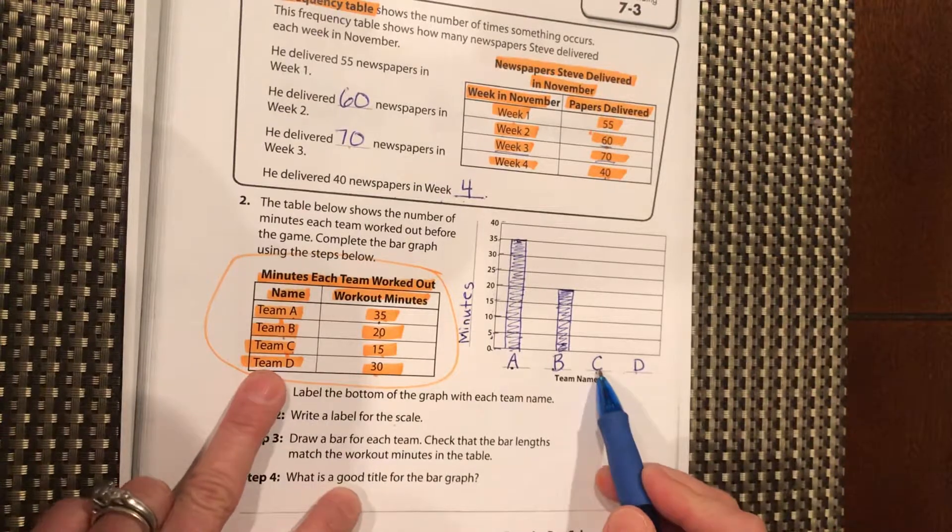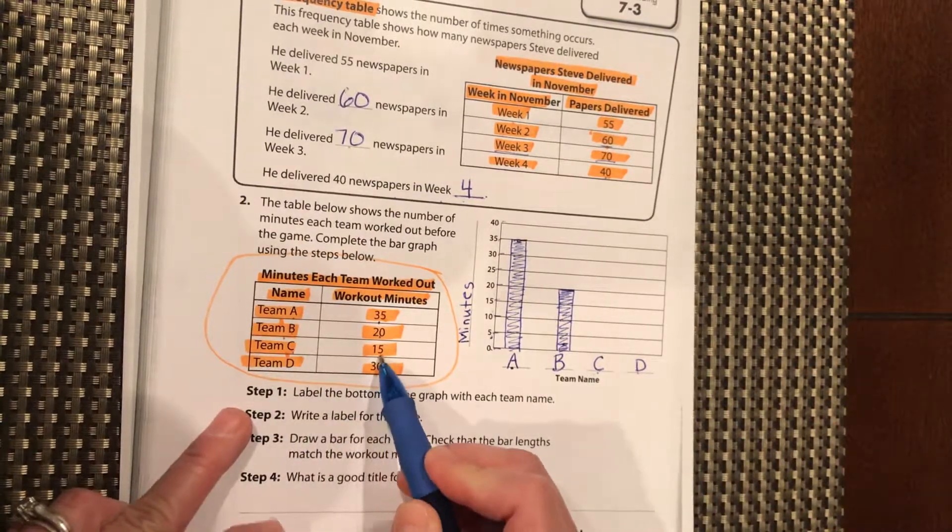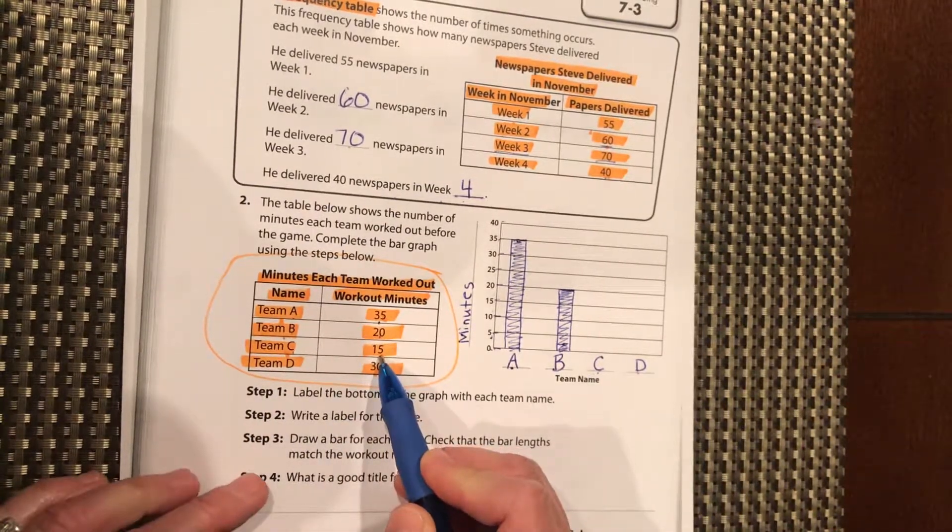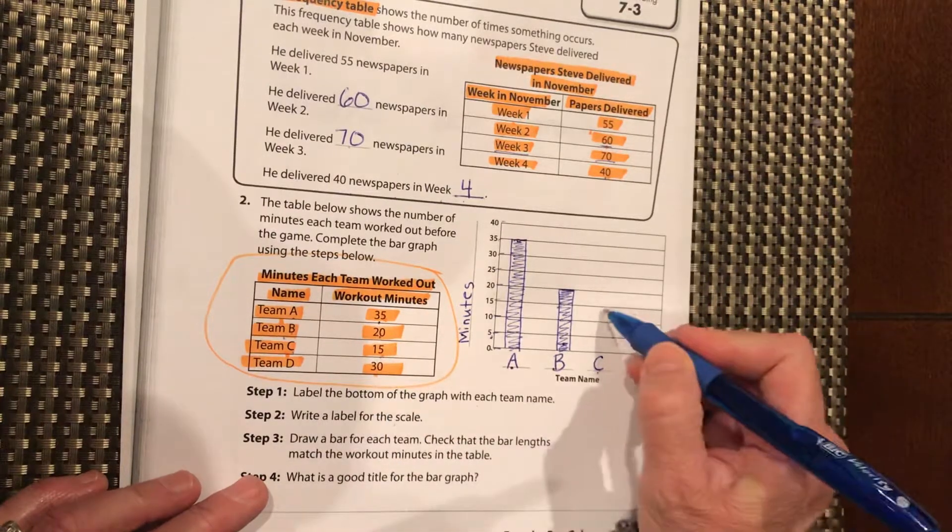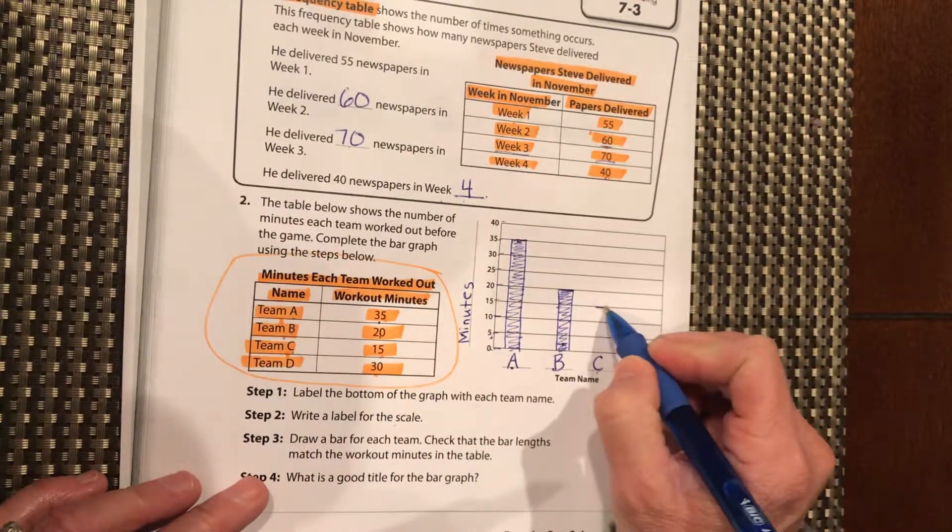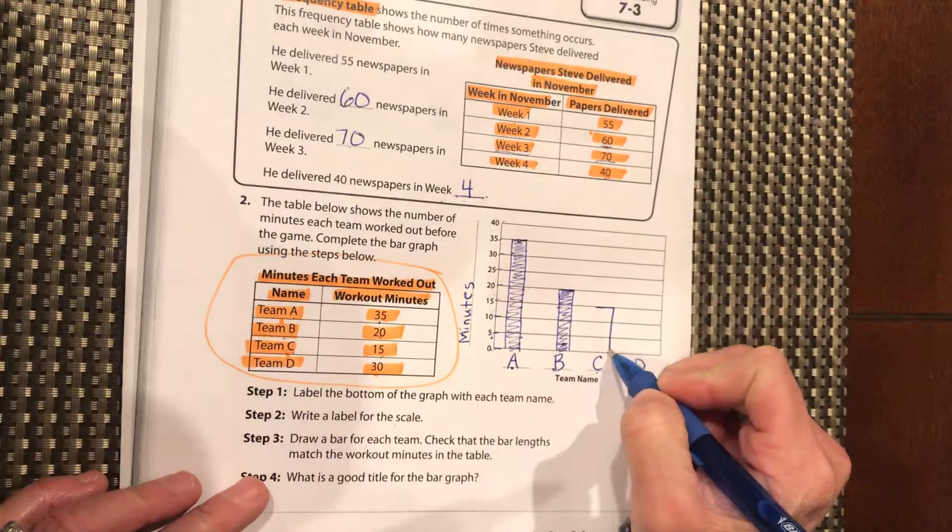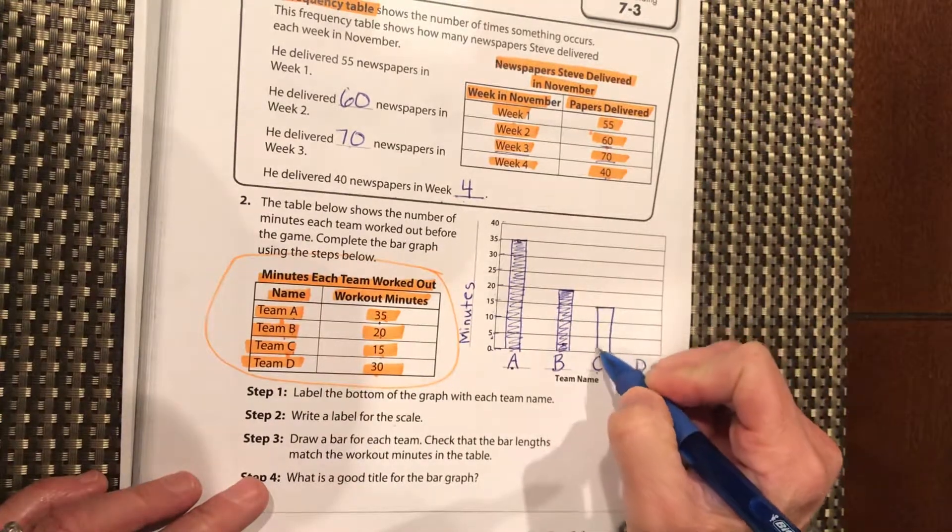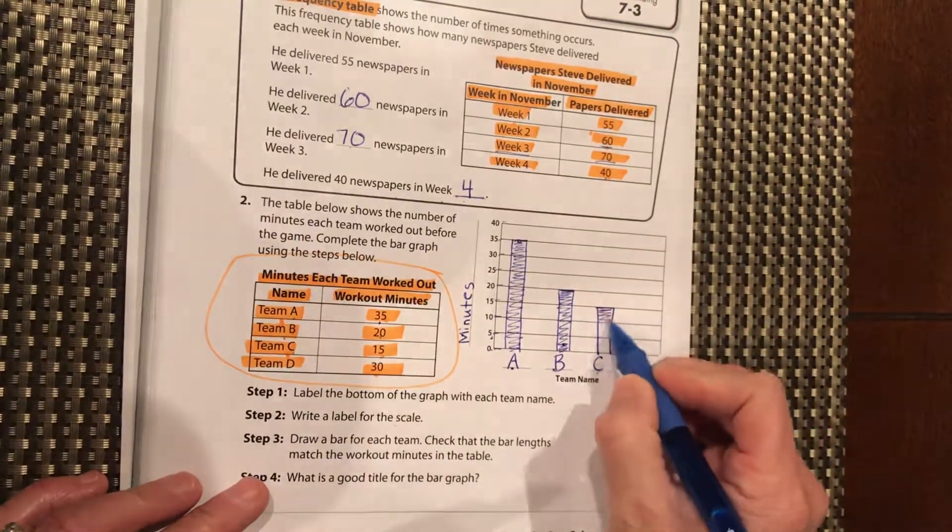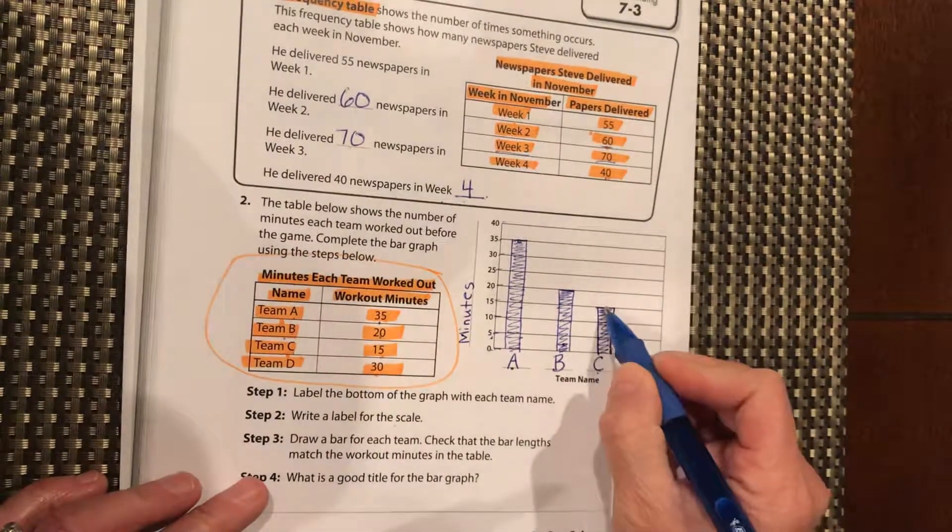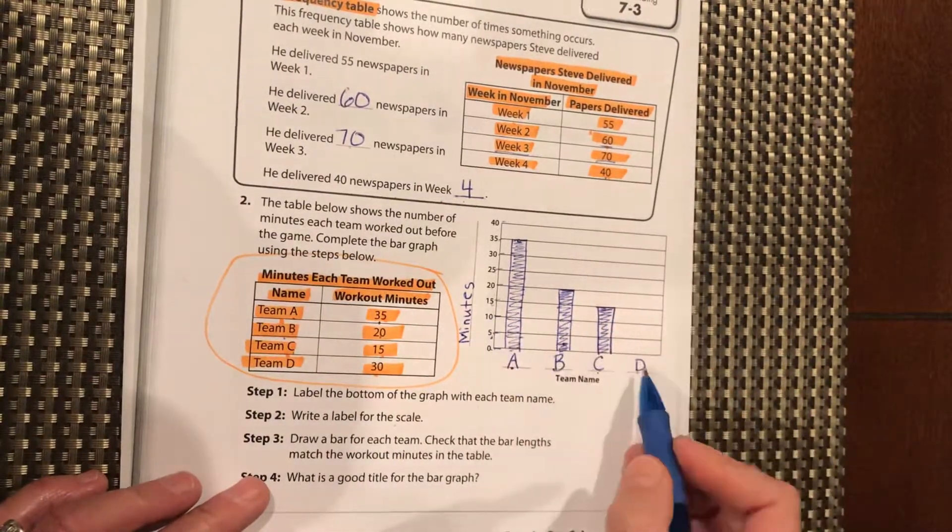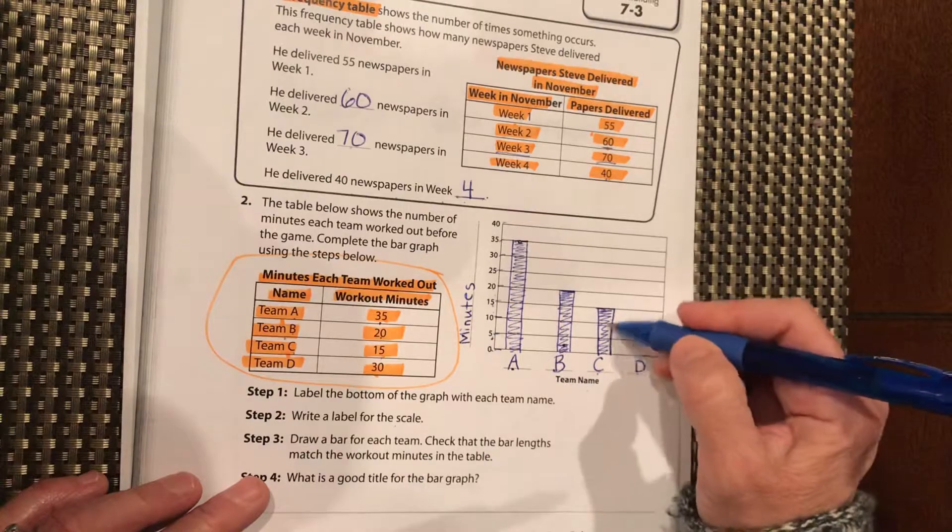Fill in the bar for team C. Pause it and fill it in and then come back. It should be 15. That line should be right there. And then pause it and do the bar for team D.